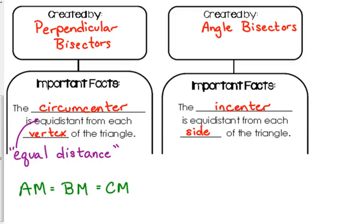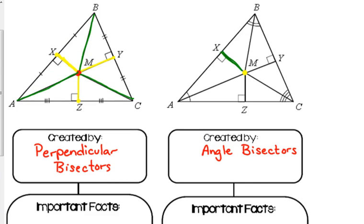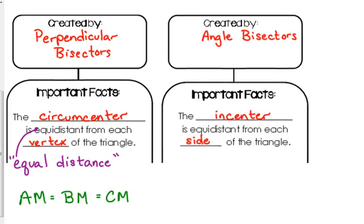So in this case, when we look at the figure, XM, YM, and ZM all have the same length.